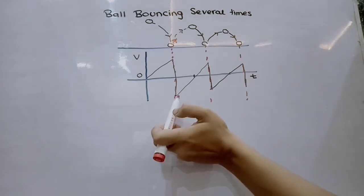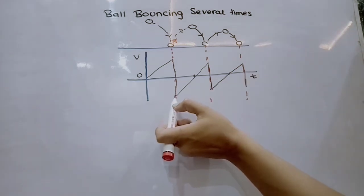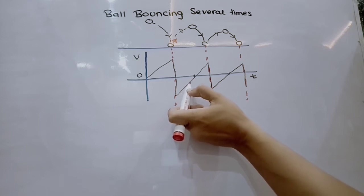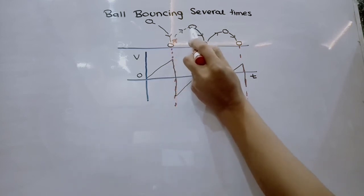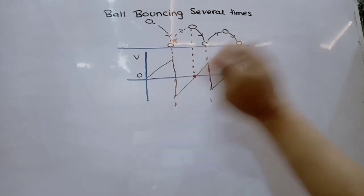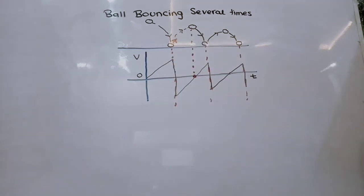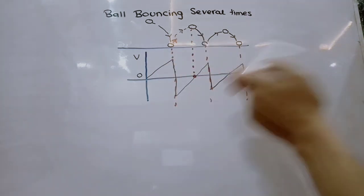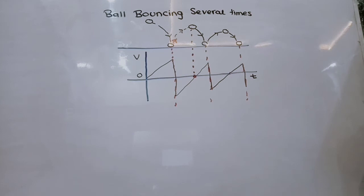Now this is the moment when it rises. When it rises and reaches its maximum height over here, at this maximum height, the velocity becomes zero. Because as you know, at maximum height, the potential energy is maximum and kinetic energy is zero.